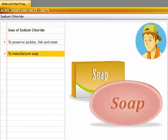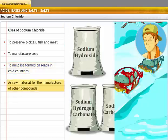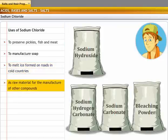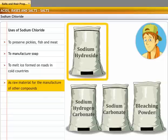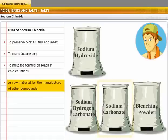Sodium chloride is used in the manufacture of soaps. It is used to melt ice that forms on the roads in cold countries. Sodium chloride is used as raw material for the manufacturing of various other useful compounds like sodium hydroxide, sodium hydrogen carbonate, sodium carbonate and bleaching powder.